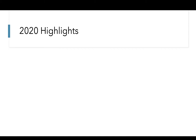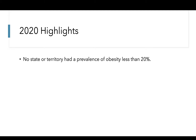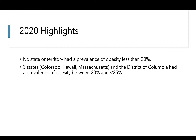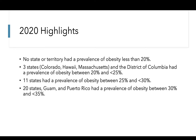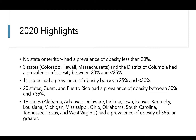To recap the most recent data from 2020: no state or territory had a prevalence of obesity less than 20%, which differs from the data we saw in the 80s and 90s. Three states and the District of Columbia had relatively lower prevalence of BMI compared to other states, but 11 had a prevalence between 25 and 30%. 20 states, Guam, and Puerto Rico had a relatively higher prevalence of obesity between 30 and 35%, and 16 states — particularly those located in the south and midwestern regions — had a prevalence of obesity of 35% or greater.